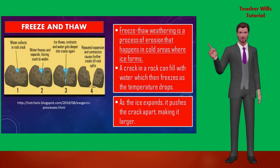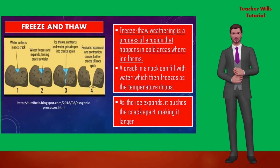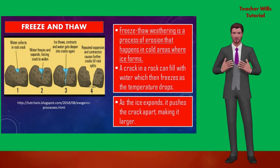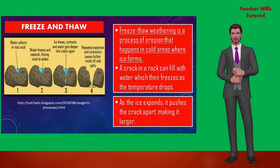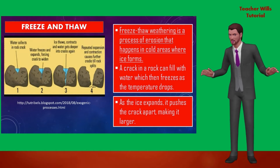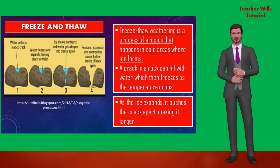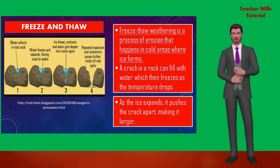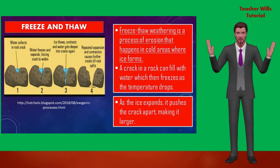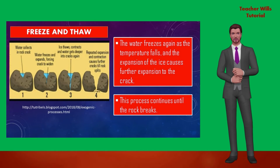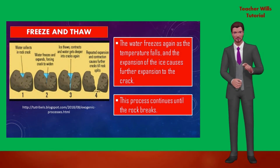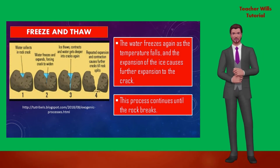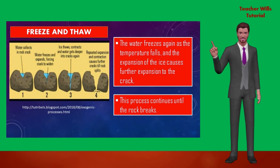Freeze and thaw: if you put a glass in the freezer it will soon break, because water expands when it freezes. Similarly, when water collects in rock pores and slits, it expands when it freezes. Freeze-thaw weathering is a process of erosion that happens in cold areas where ice forms. A crack in a rock can fill with water, which then freezes as the temperature drops. As the ice expands, it pushes the crack apart, making it larger. When the temperature rises again, the ice melts and water fills the newer parts of the crack. The water freezes again as the temperature falls, causing further expansion of the crack. This process continues until the rock breaks.